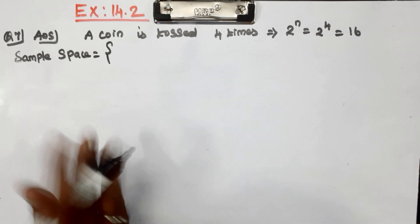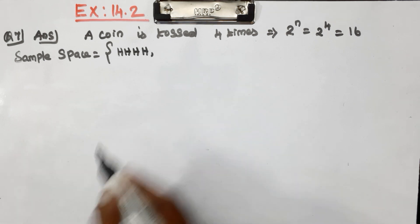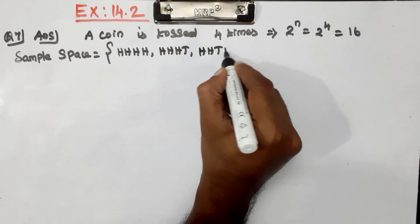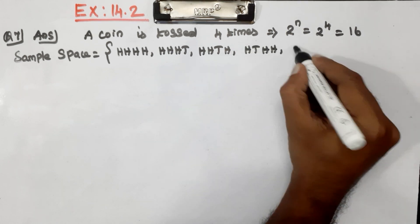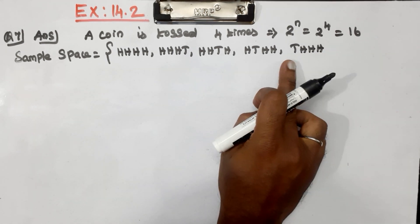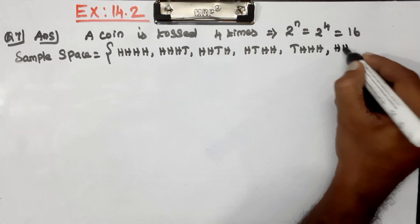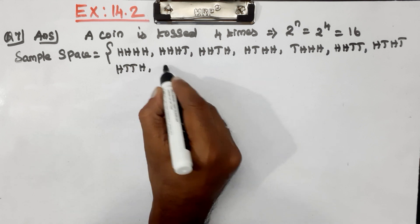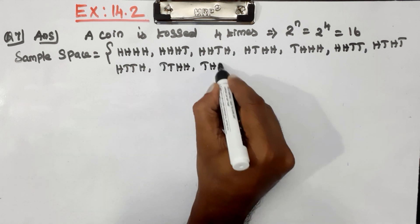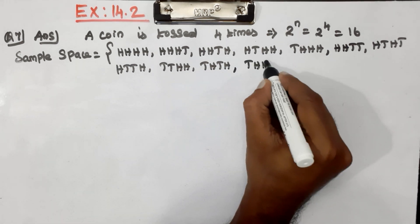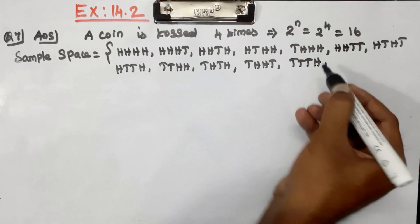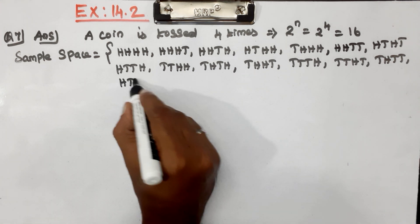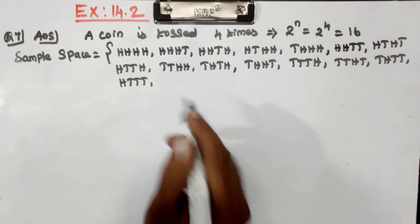The sample space equals the total number of outcomes for 4 tosses. For example: head, head, head, tail; head, head, tail, head; tail, tail, tail, head — and so on. The first toss can be tail and the last can be tail as well.